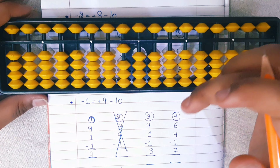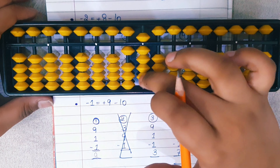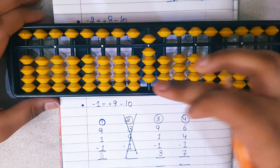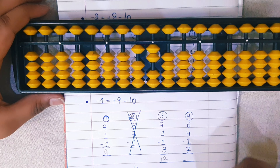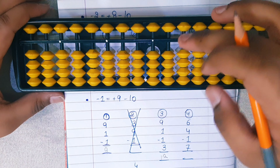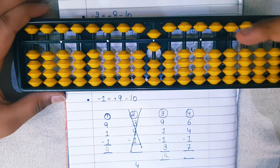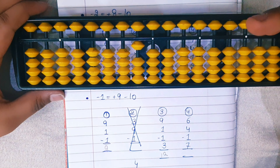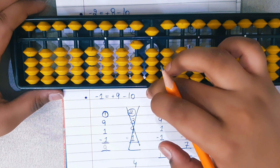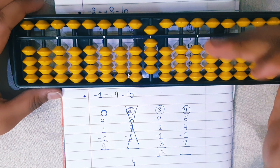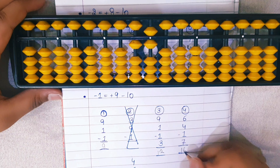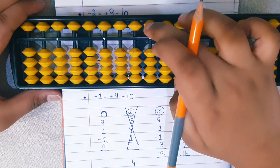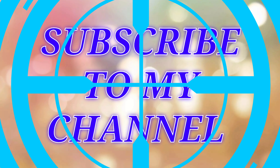Third question: 9 plus 1 — minus 9 plus 10 — and then minus 1: plus 9 minus 10 — and then plus 3 minus 7 plus 10. Answer is 12. Fourth question: 6 plus 4 — minus 6 plus 10 — and then minus 1: plus 9 minus 10 — and then plus 7 minus 3 plus 10. Answer is 16. Hope you like this video — please like, share, comment, and subscribe to our channel. Bye friends!